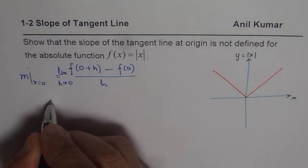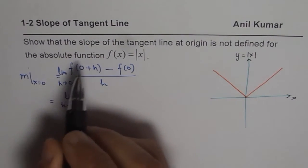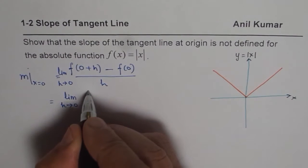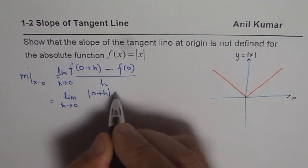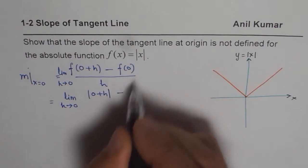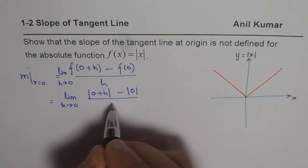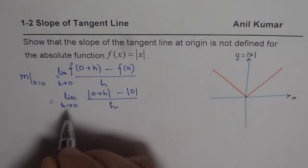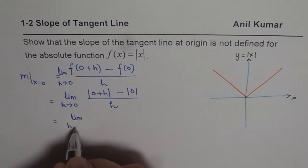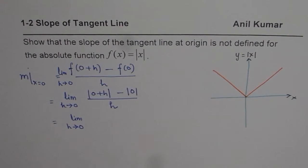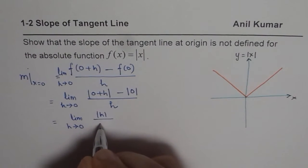For the absolute value function, f(x) = |x|, we can write this as the limit as h approaches 0 of [|0 + h| − |0|] / h. Substituting 0 for x in the denominator, what we get is the limit as h approaches 0 of |h| / h. So that is the slope of the tangent for the absolute function as we approach 0.